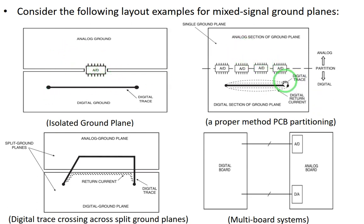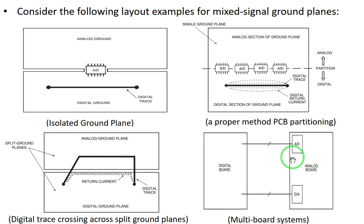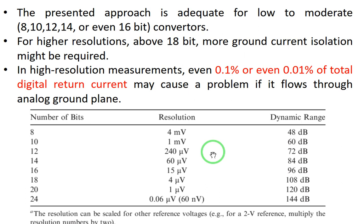If you have more than one ADC, you can use the partitioning approach already described. If you don't have very high resolution ADCs — more than 16 bits — then this is a good approach: you have multiple analog inputs and can use this method. You should never route traces across split ground planes because as you can see it creates a very large loop. If you have multiple board systems with a digital board and an analog board, it's always best to put the ADCs and DACs on the analog board along with all the analog circuits.